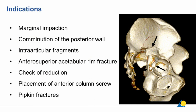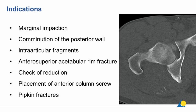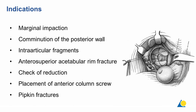Indications for safe surgical hip dislocation include: marginal impaction, typically in combination with comminution and multifragmentary posterior wall fractures; intraarticular fractures; anterosuperior acetabular rim fractures extending to the iliac spine. It is also indicated to check reduction in multifragmentary fragments and confirm correct screw, blade, and anterior column screw placement. Additionally, it is the approach for treating Pipkin fractures — femoral head fractures combined with posterior hip dislocation.